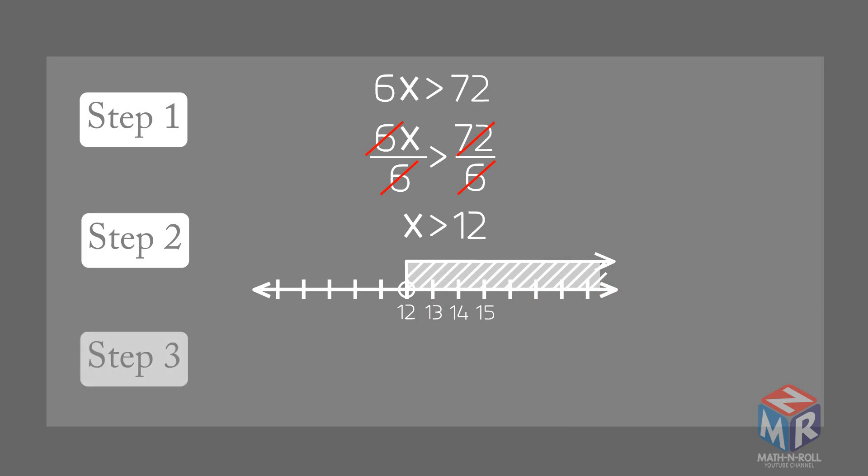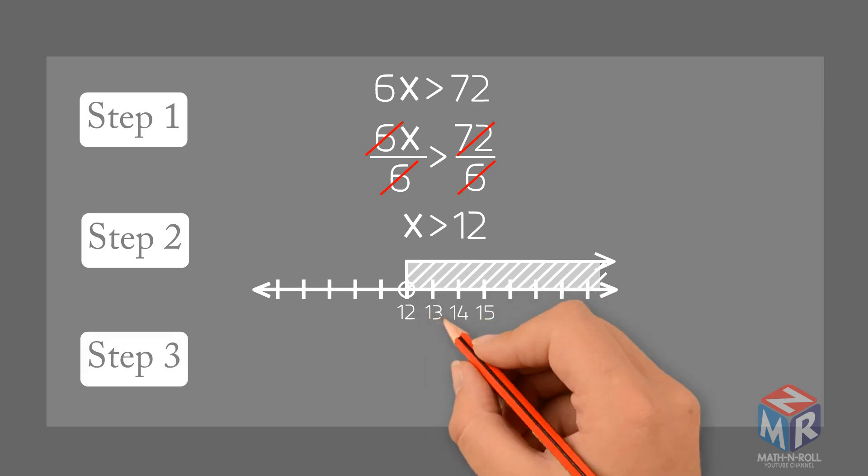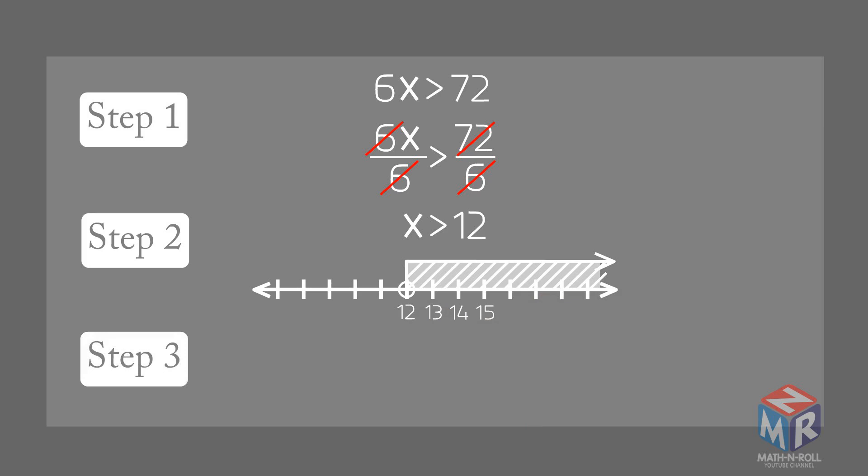Step 3: Check the solution. Substitute a solution from the shaded part of your number line into the original inequality. Substitute 13 for x into 6x is greater than 72.